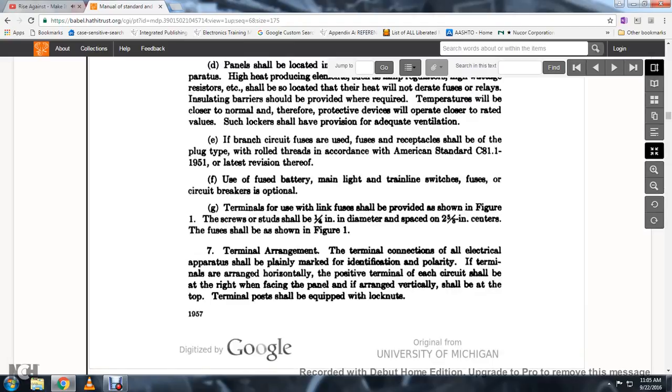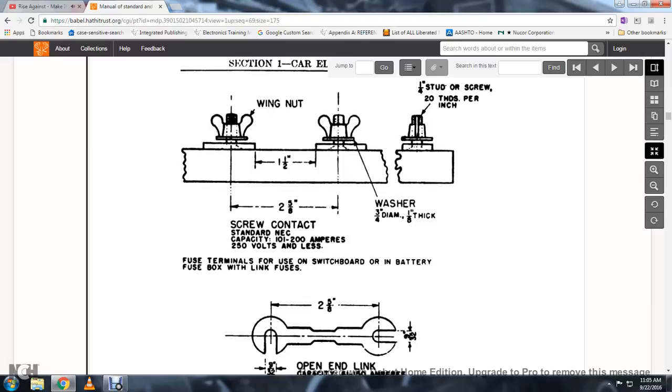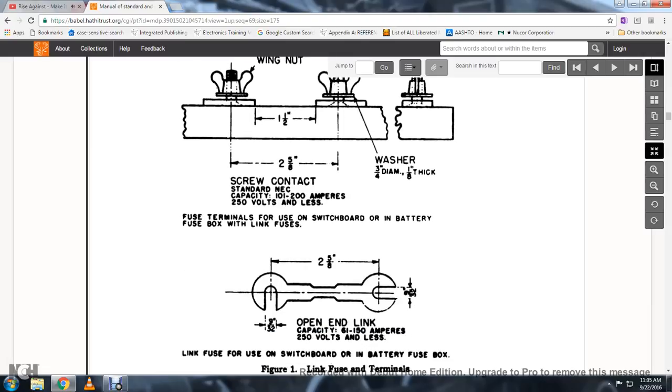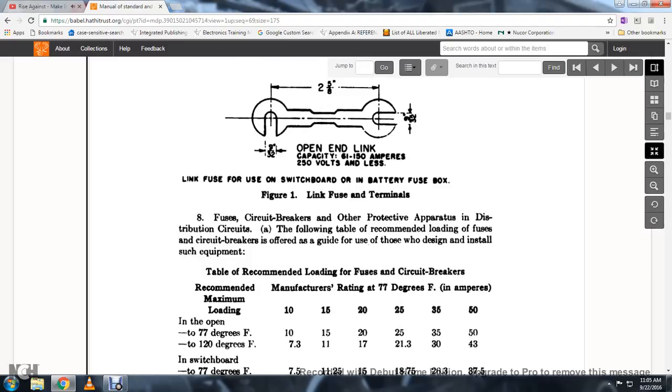Terminal Arrangements: The terminal connections of all electrical apparatus shall be marked for duplication of polarity. When terminals are arranged horizontally, the positive terminal on each circuit shall be at the right, and when facing the panel arranged vertically, shall be at the top. Terminal posts shall be equipped with lock nuts. This shows screw contacts, wing nuts for use with terminals for switchboards on battery or fuse box links. This is a link fuse terminal on the switchboard or battery fuse box.